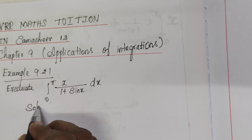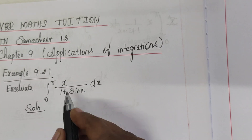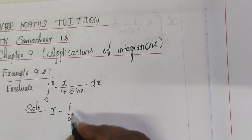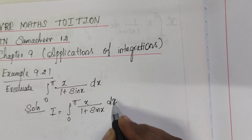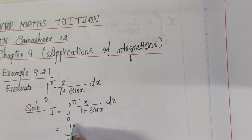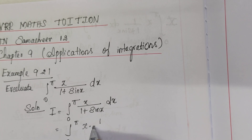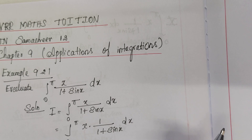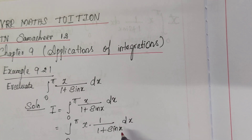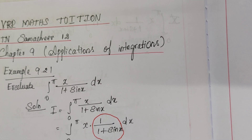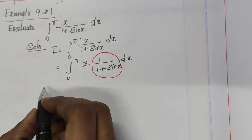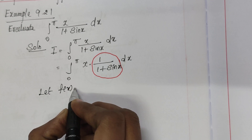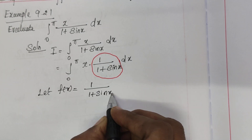Solution. First write the given integral as I. So I is equal to the integral from 0 to π of x divided by (1 + sin x) dx. This is equal to the integral from 0 to π of x times [1/(1 + sin x)] dx. We take the term 1/(1 + sin x) as f(x). Therefore f(x) = 1/(1 + sin x).